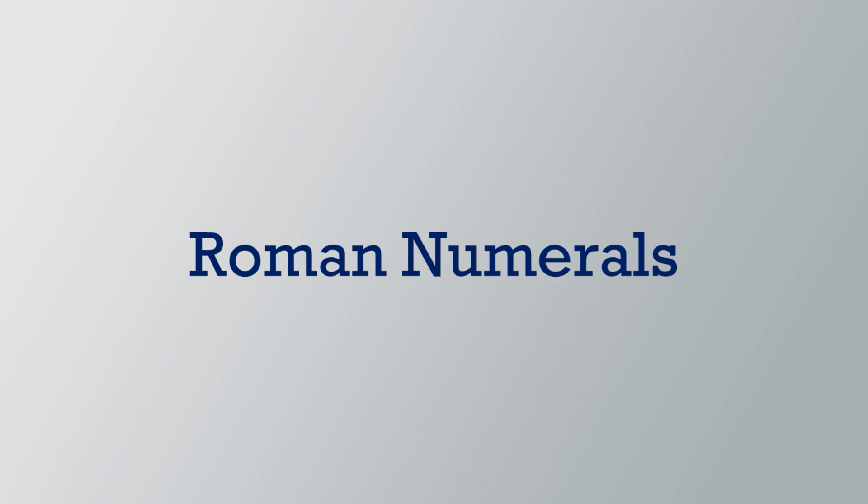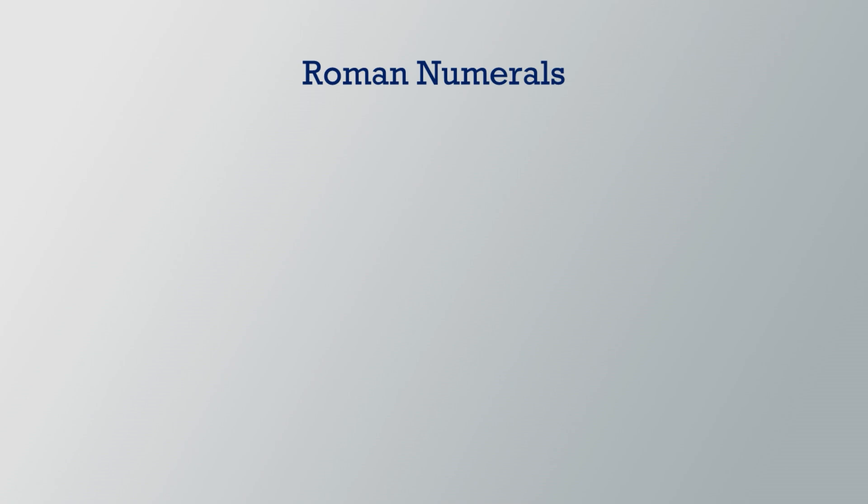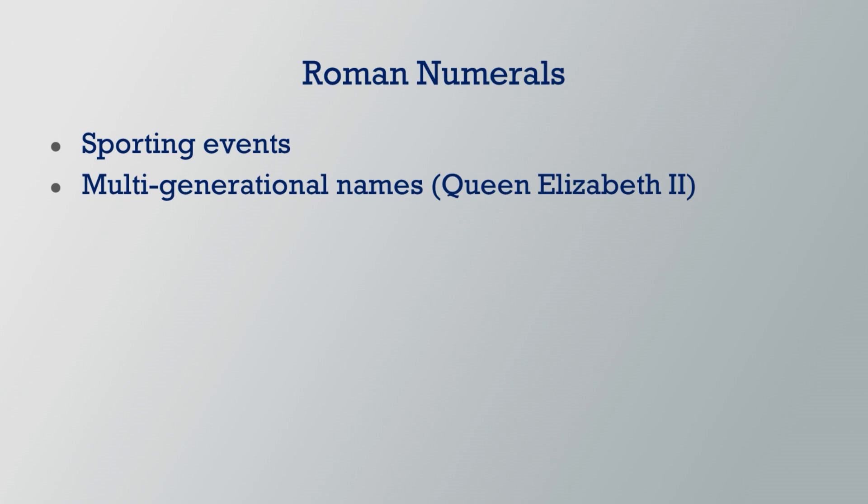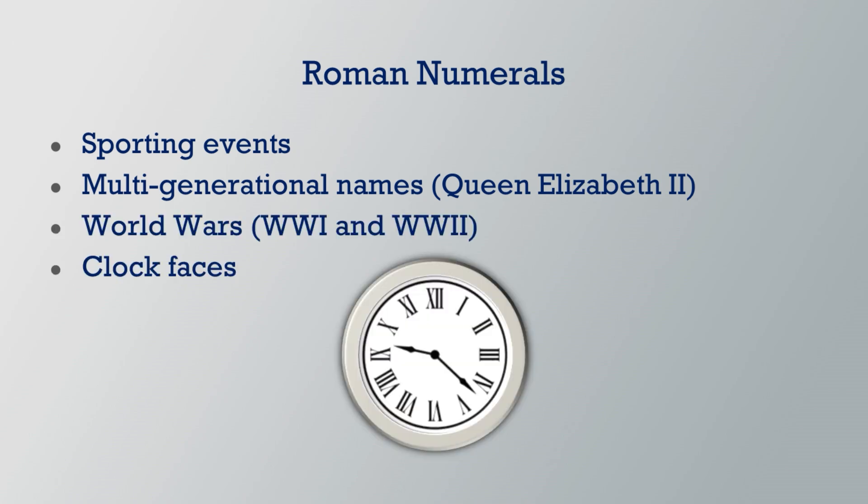Roman numerals began in ancient Rome as a common method of counting and communicating. Today, Roman numerals are used for numbering sporting events, multi-generational names including royalty like Queen Elizabeth II, the world wars, and some clock faces.